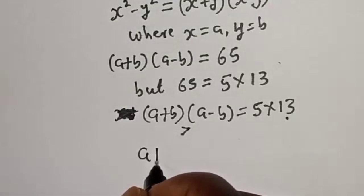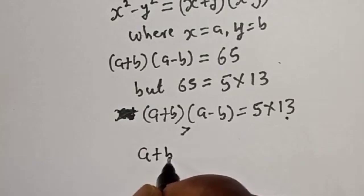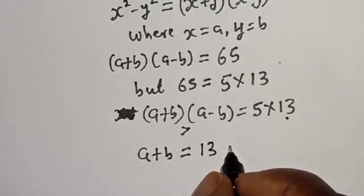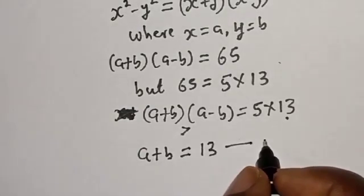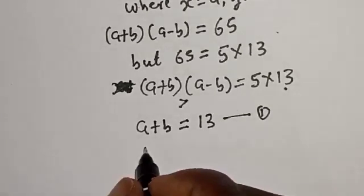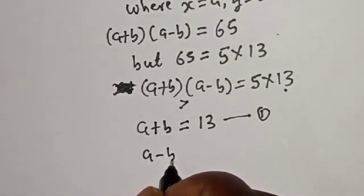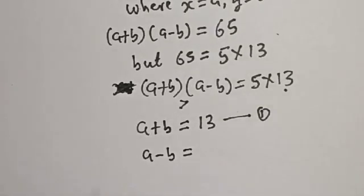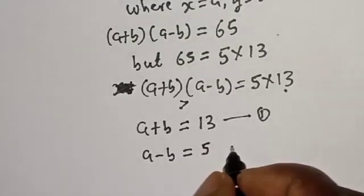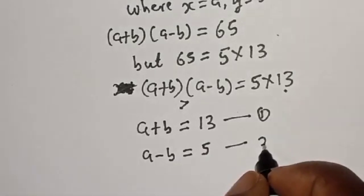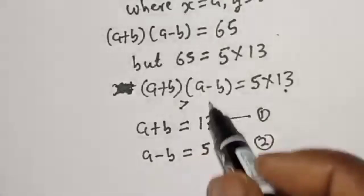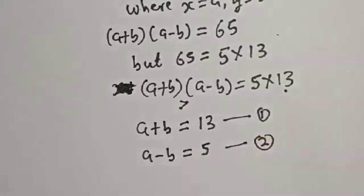We have A plus B is equal to 13 — let's call this equation 1. And also, A minus B is equal to 5 — let's call this equation 2, where A and B are positive integers.